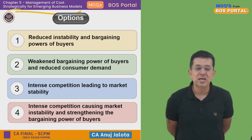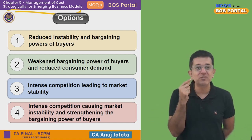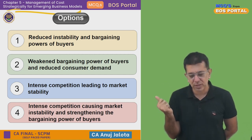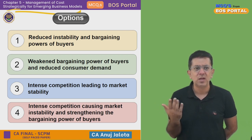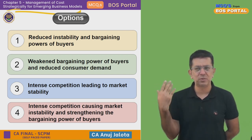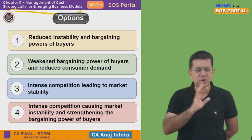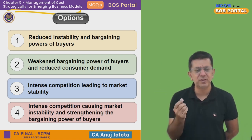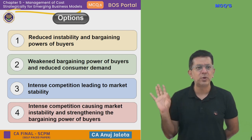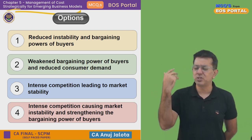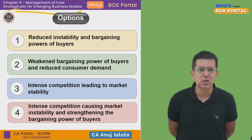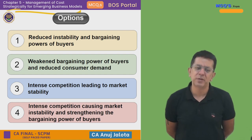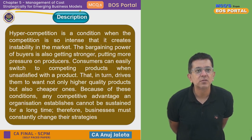Option four says 'intense competition causing market instability and strengthening the bargaining power of buyers' — yes! The bargaining power of buyers becomes far better because they have substitutes. If they don't buy this, they'll buy something else. That perfectly makes sense in a hyper competitive market. So option four is the correct answer.